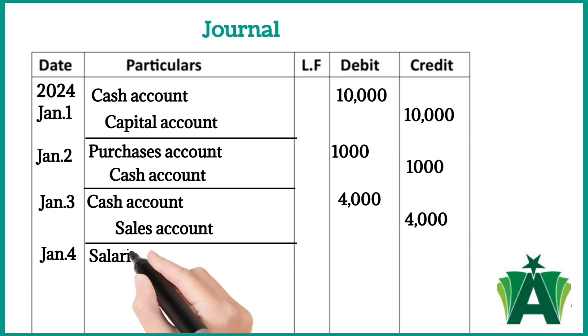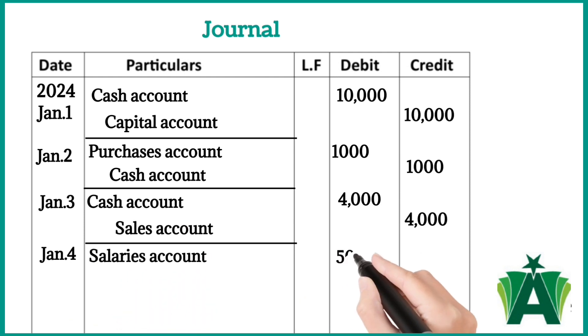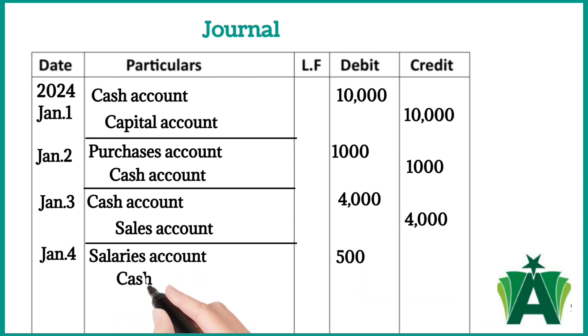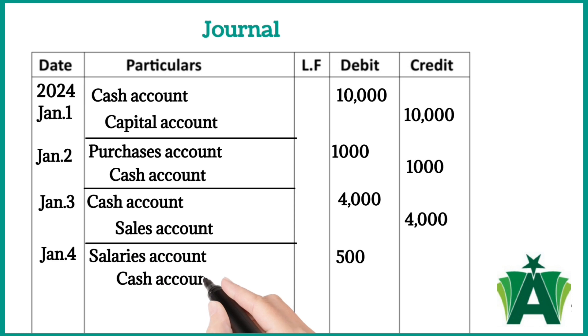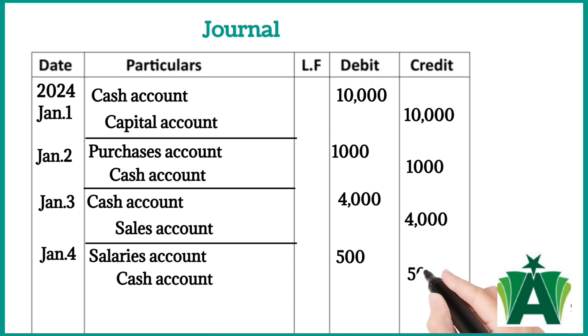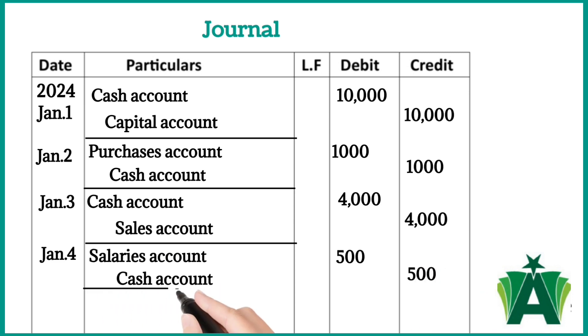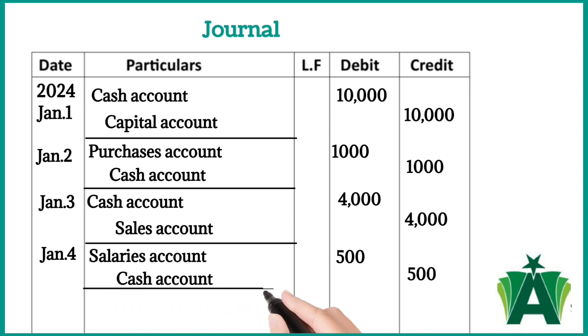Paid salaries $500. Salaries account is debited because of an expense increase in the business. Cash account is credited — this decreases the value of cash.